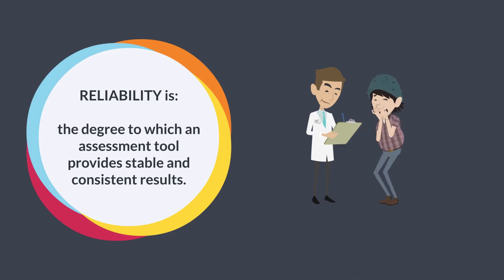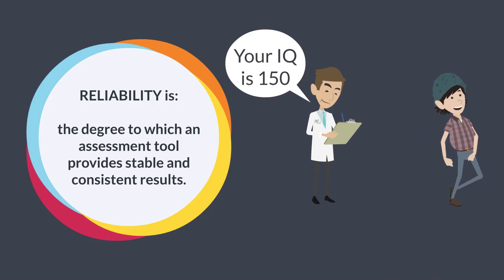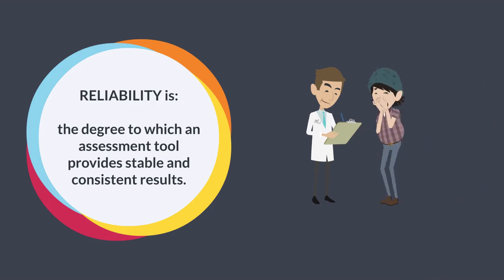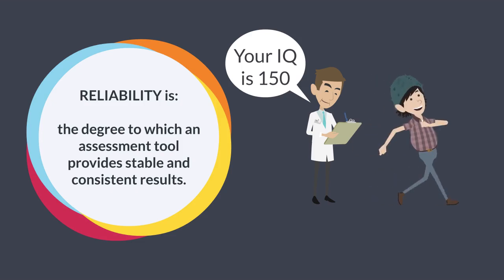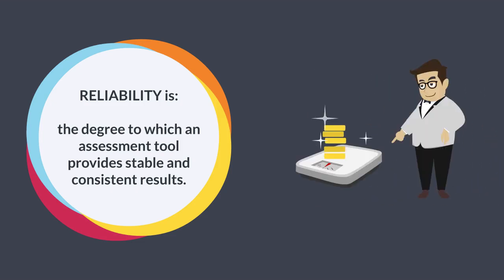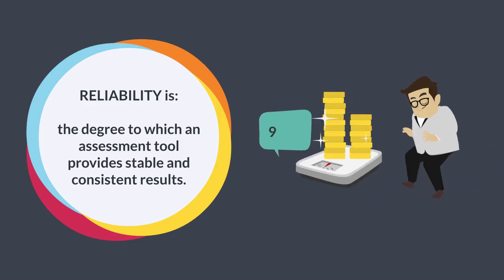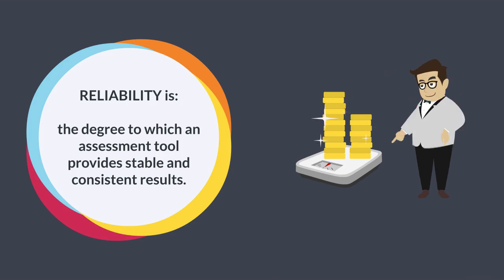These are some examples of reliable measurements. An IQ test that scores the same individual's IQ at 150 every time they sit the test, and a weighing scale that gives the same weight when a rich baron's prized collection of gold bullion is weighed over and over again.